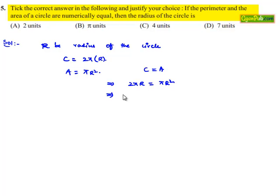That implies r² divided by r is equal to 2π divided by π, which implies r is equal to 2 units. Therefore, option A is the right answer.